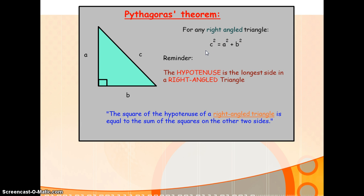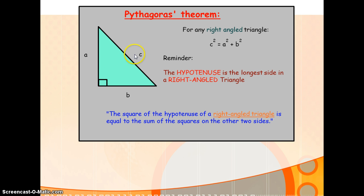How do you know which side is the hypotenuse? The hypotenuse is always opposite the right angle. So whichever side is opposite the right angle, that is always the hypotenuse. And the hypotenuse is the longest side.